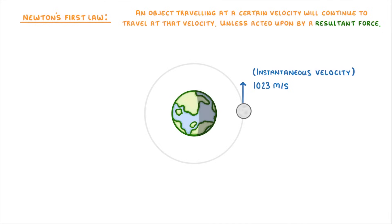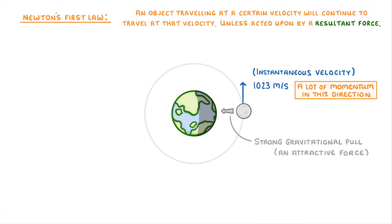However, because the Earth is so massive and relatively close to the Moon, it exerts a strong gravitational pull, which is felt as an attractive force towards the Earth. Because the Moon is quite big and travelling very fast, it has a lot of momentum in this forward direction, and so the gravitational force isn't strong enough to completely pull it in towards the Earth. It can only change its direction very slightly.